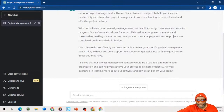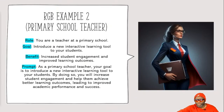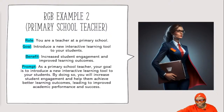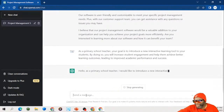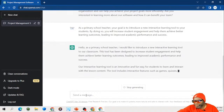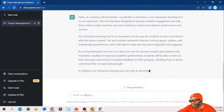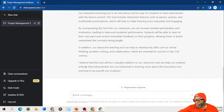The next example is from the world of teaching. Primary school teacher - you're a teacher at a primary school, introduce a new interactive learning tool to your students. Increased student engagement and improved learning outcomes is what you're after. Crafted with the Role-Goal-Benefit language: 'As a primary school teacher, your goal is to introduce a new interactive learning tool to your students, and by doing so you will increase student engagement.' Look at how the wording is set up so that whoever is reading or listening finds it exactly what we want it to be. 'By incorporating this into our classroom, we can increase student participation and motivation leading to improved academic performance.' See how robust the AI's answers are.